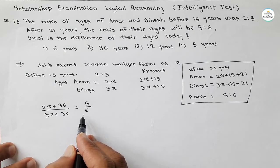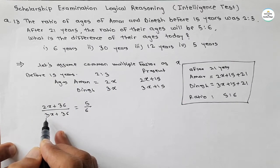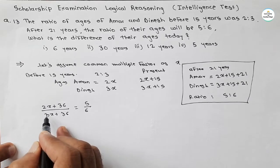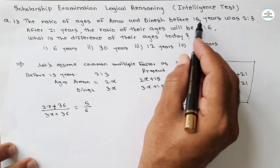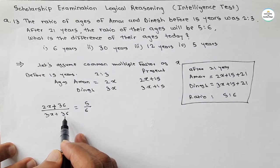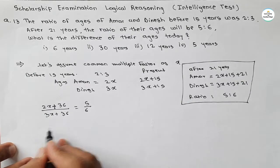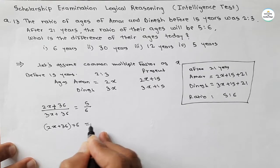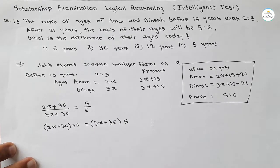This equation we can derive directly with the help of data. Because the ratio is 2x to 3x before 15 years, and 5 to 6 after 21 years, the total difference is 15 plus 21 equals 36. So the equation is: (2x + 36) / (3x + 36) = 5/6. Take cross multiplication: (2x + 36) × 6 = (3x + 36) × 5.